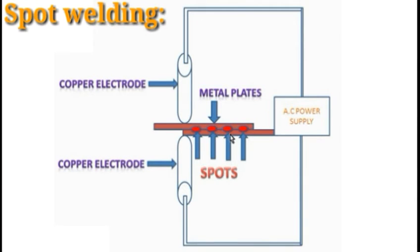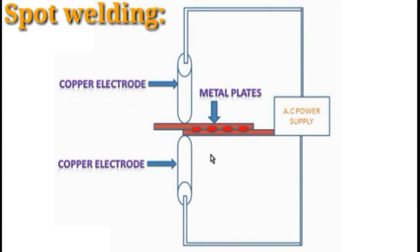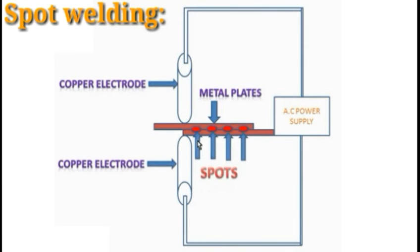In this summary, the heat is produced by the current and the metal plates are formed by the metal plates. This is why the welding is produced by the current.